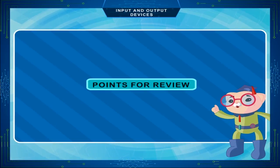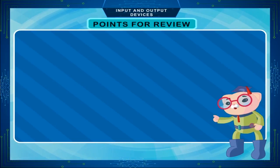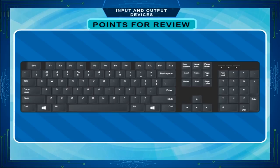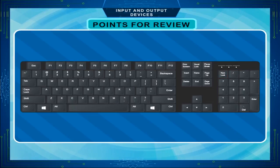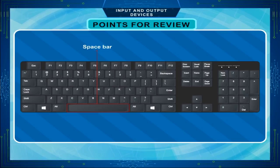Points for Review: A keyboard has many small buttons called keys. The keyboard has different sets of keys: alphabet keys, number keys, function keys, arrow keys, enter keys, and a space bar.